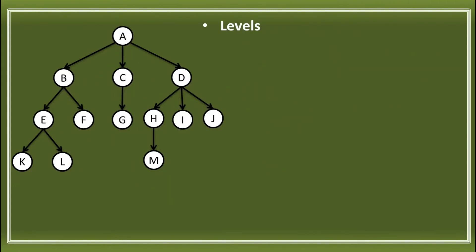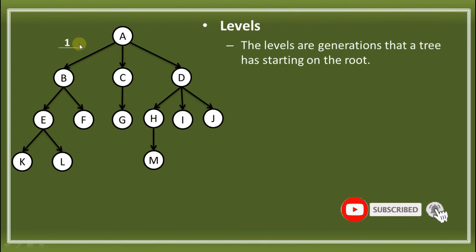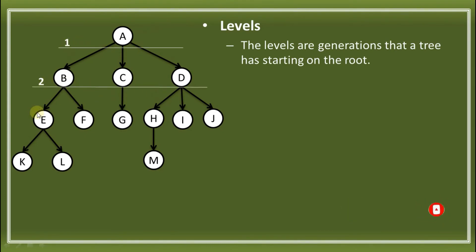Next, we have labels. Labels are the generations that a tree has, starting from the root. We have the first label, then the second label, the third, and the fourth labels. That is the generation from parent to child, to grandchild, to great-grandchild of the tree.